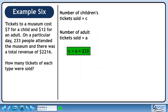The number of children's tickets sold is labeled C and the number of adult tickets sold is labeled A. We can write the equation C plus A equals 233 since the total number of tickets sold is 233.